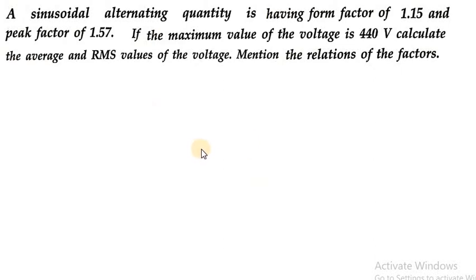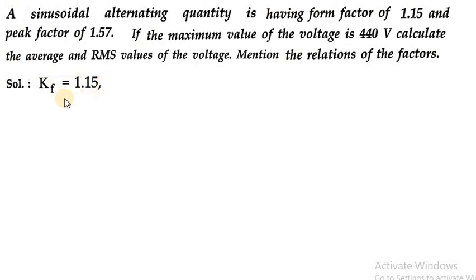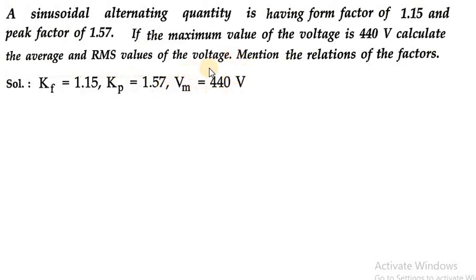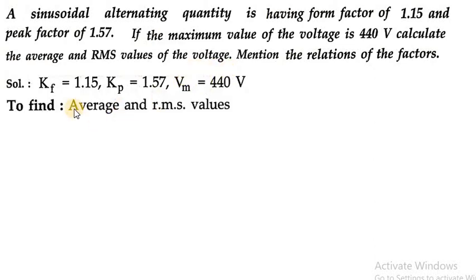In this numerical they have given two factors: form factor and peak factor, and we have to calculate average value and RMS value. The given data is: form factor Kf = 1.15, peak factor Kp = 1.57, and maximum value of the voltage is 440 volt. We have to find out average value and RMS value.